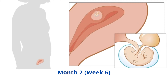Week 6: the embryo's brain and spinal cord grow rapidly, causing the embryo to take a curled up position. The neural tube is now fully formed. Little buds appear on the embryo's body which will become the arms, legs, and other structures.